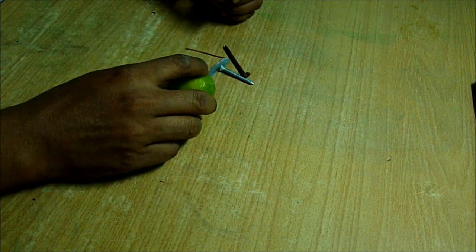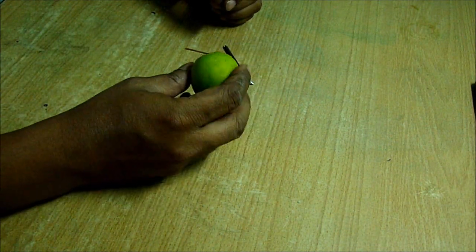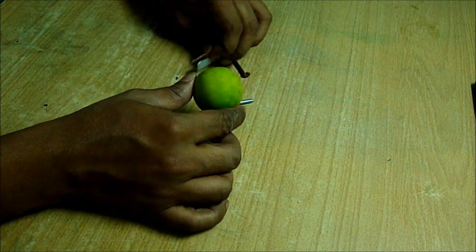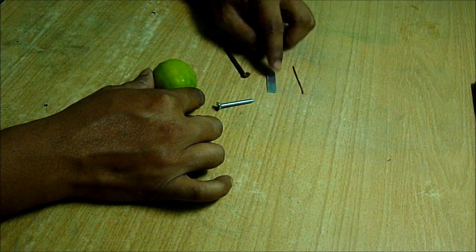I'm going to show now how we can make a very simple battery using a lemon and two metal pieces, two different metal pieces.